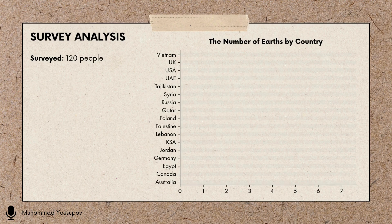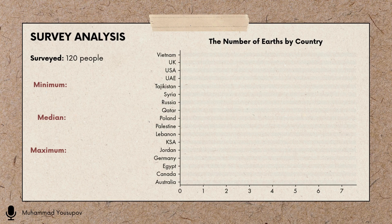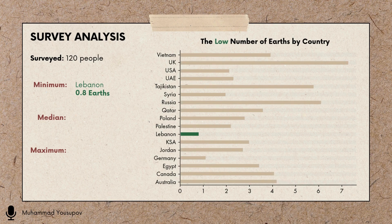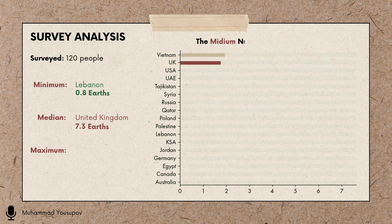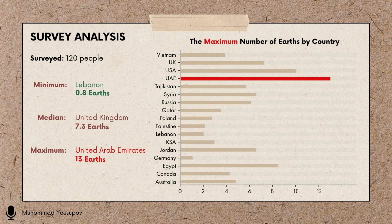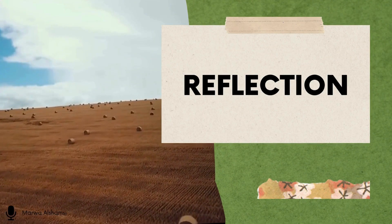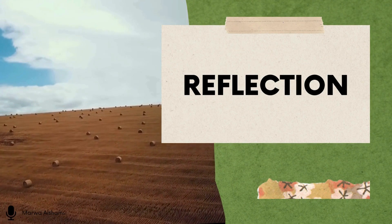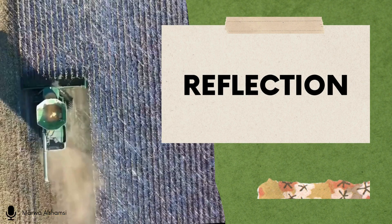Taking the previous boxplot into account, we categorized results by country of residence and analyzed the number of Earths required, assessing the lowest, medium, and maximum numbers. We discovered that the country with the minimum number of Earths required is Lebanon with 0.8, the medium is the United Kingdom with 7.3, and the maximum is the UAE with 13 Earths required to outpace their ecological footprint.